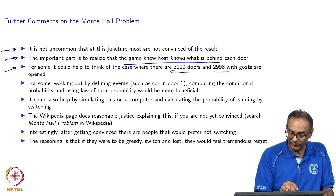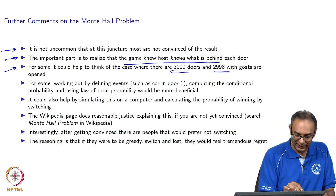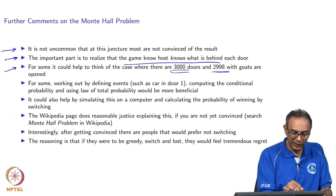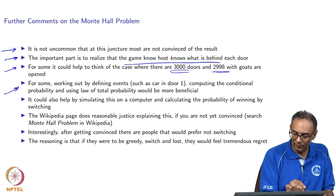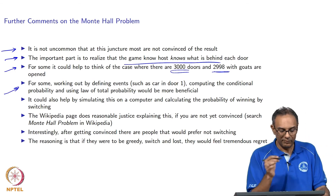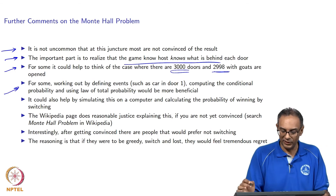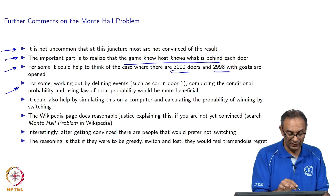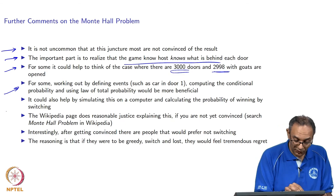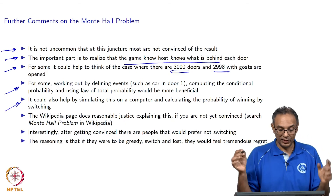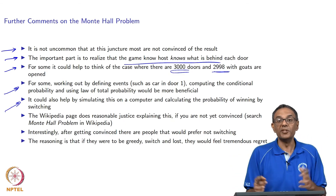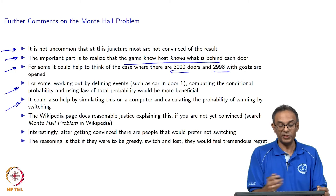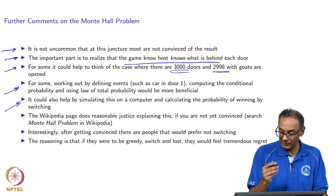For some people, it might help to think of the special case of 3,000 doors, where 2,999 of them have goats and one has a car. When you pick one door and the game show host opens 2,998 of them, leaving one door closed, would you switch to that one door? Turns out if you did that, there is a very good chance of actually getting the car. You can also do the conditional probability argument mathematically using the law of total probability, or write a computer program to simulate and show this computation.